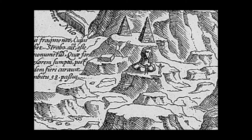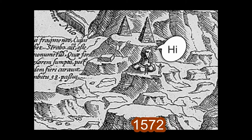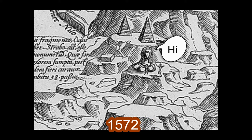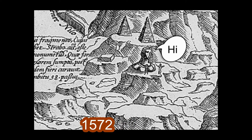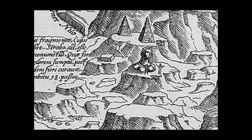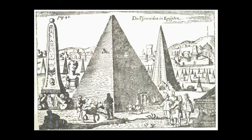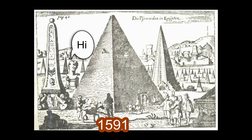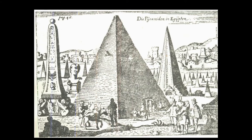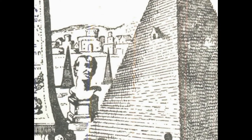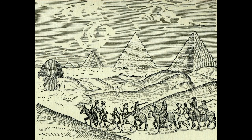Over time, and I'm going to use the dates given — this is 1572 right here — and that is how the sphinx is represented as a head on a platter idea, and then plateaus and not much else. Later on, in 1591, you have the same idea but with a lot more so-called little pyramids out there, and the sphinx being nothing more than a head on a platter again.